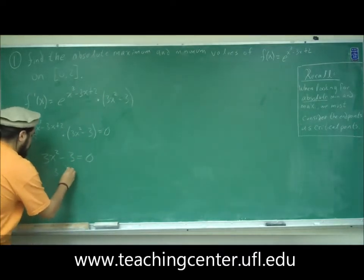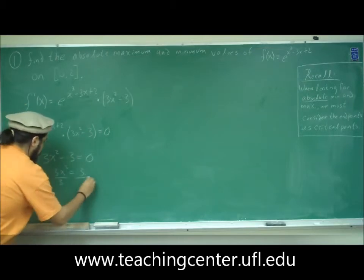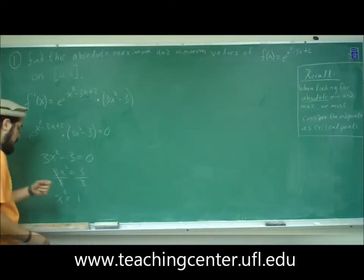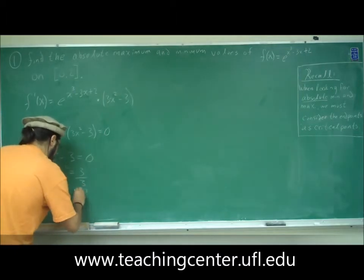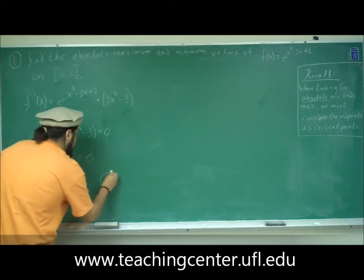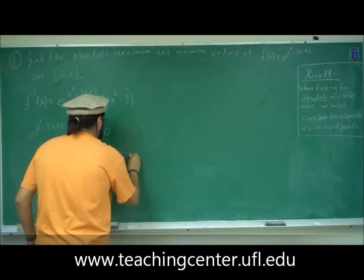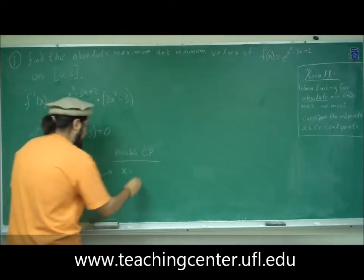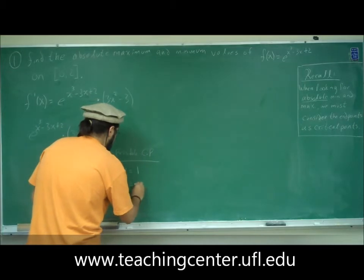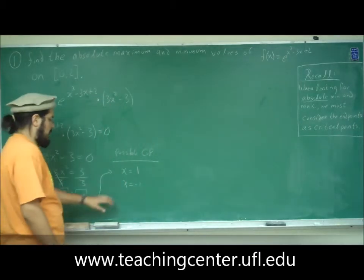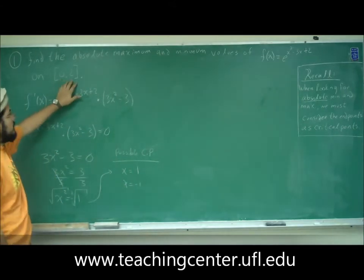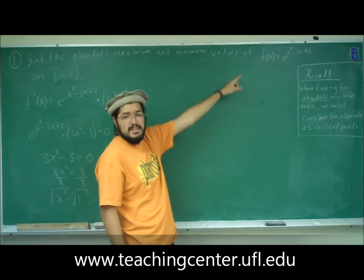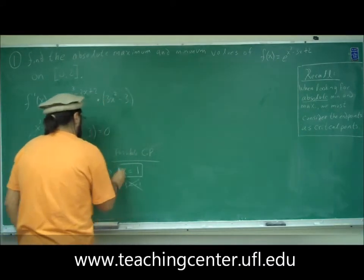Moving 3 over and dividing both sides by 3, we get x² = 1. Taking the square root of both sides gives x = ±1. So our possible critical points are x = +1 and x = -1. However, -1 is not on the domain from 0 to 2, so that's excluded. And 1 is on the domain; f(1) is defined, so x = 1 is a critical point.